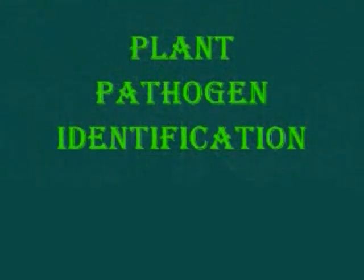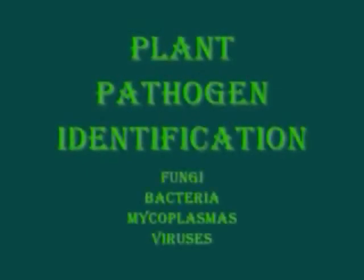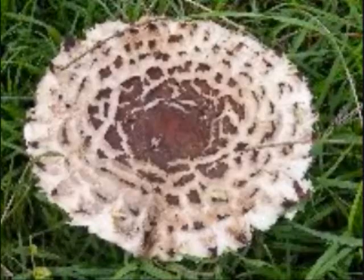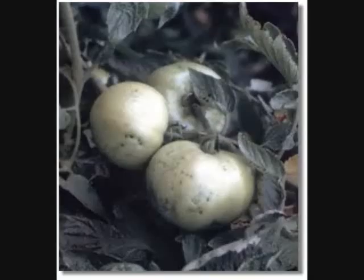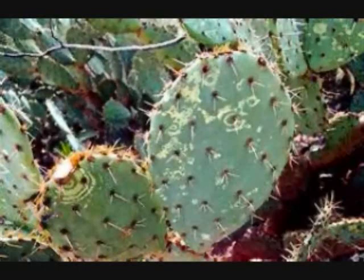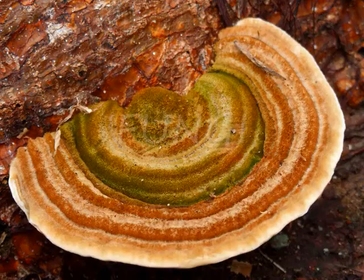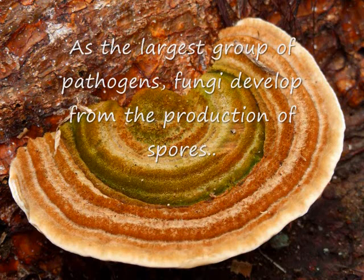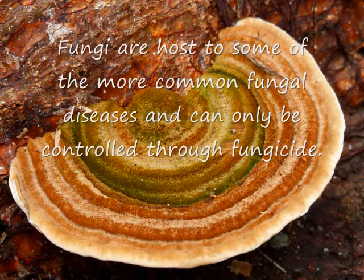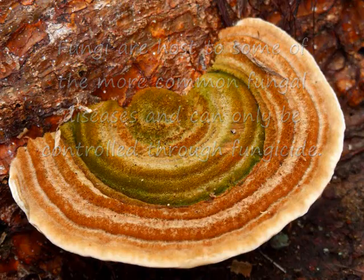Plant Pathogen Identification: Fungi, Bacteria, Mycoplasmas, and Viruses. How to identify fungi: as the largest group of pathogens, fungi develop from the production of spores. Fungi are hosts of some of the more common fungal diseases and can only be controlled through fungicides.